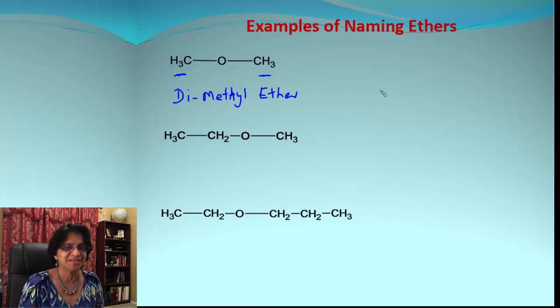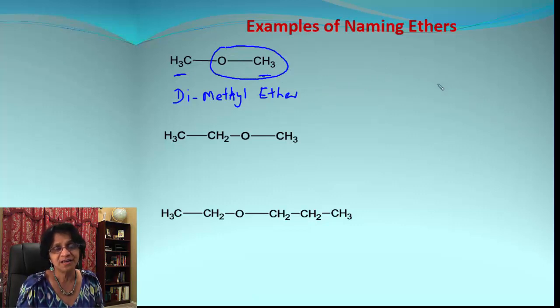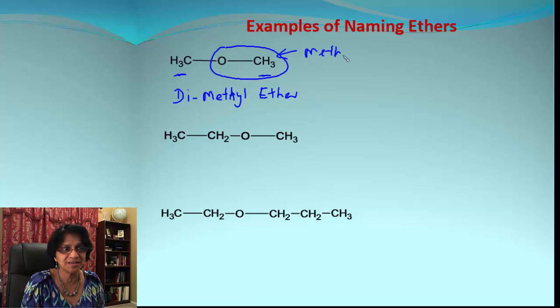How do we name it by IUPAC method? In that method, we are going to consider one of the groups as alkoxy. In this example, both the groups are exactly the same size - there is no larger and no smaller - so we're going to consider one of them as alkoxy. This will become methoxy and this will be the alkane part, which will be methane. So the ether becomes methoxymethane.